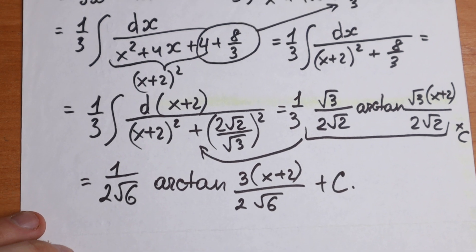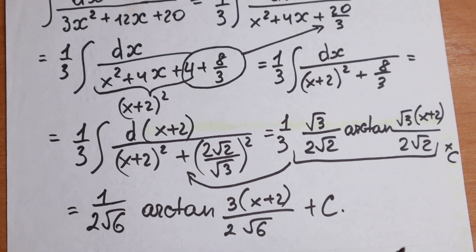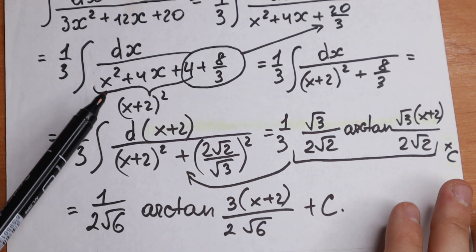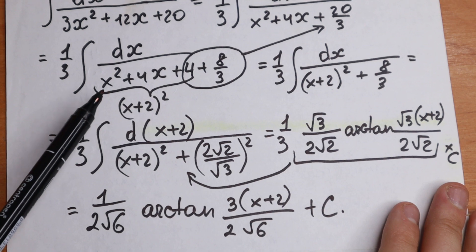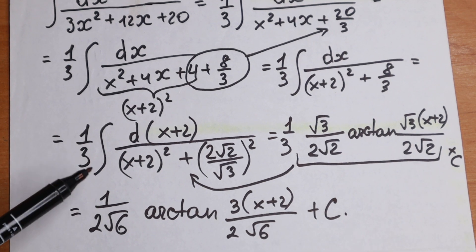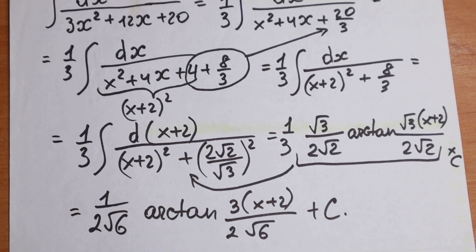What do you think about this approach? Maybe you have a different method to solve it — this is my approach and I like it. This approach involves factoring, finding square roots, and completing the square. Write a question, a comment, or a suggestion. Thank you so much for watching, and see you in the next videos!